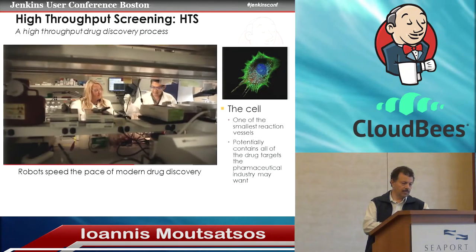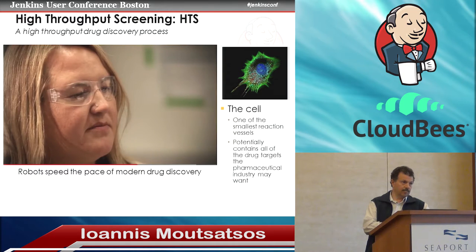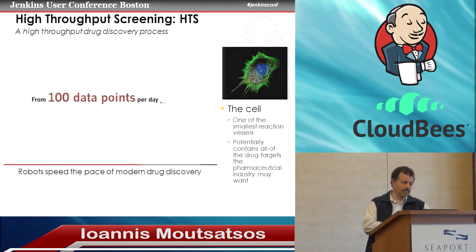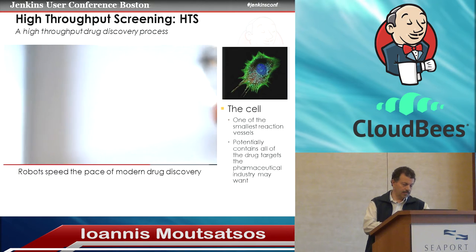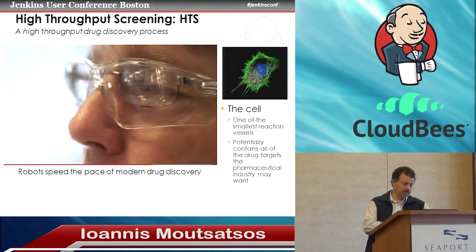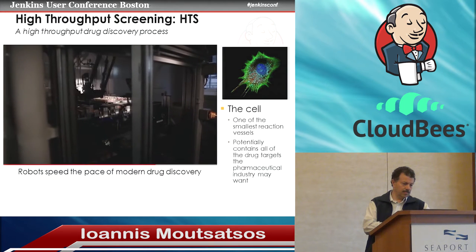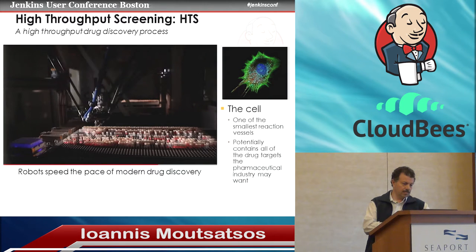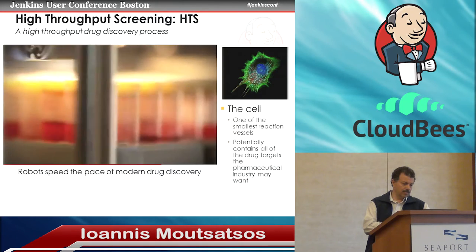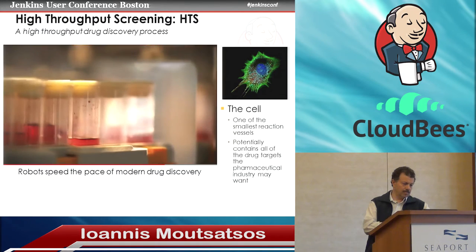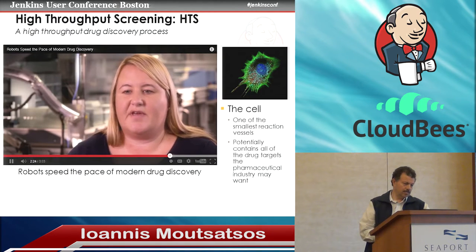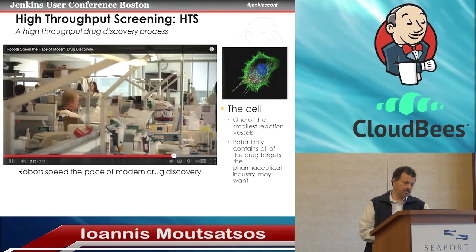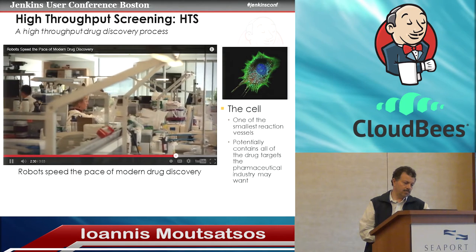"I think the most significant challenge with high-throughput screening is the vast amount of data we're generating now. When we used to generate 100 data points per day or even less, we're now generating 150,000 data points per day, which is even more. But then what to do with that data — that's where the science is. The main benefit for using high-throughput screening in drug discovery is the speed at which you can get to a drug. The motivation for all of this is to find something that can help a patient. Now that we've enabled high-throughput screening, we get a lot closer to starting points for drugs, and we get there a lot faster."